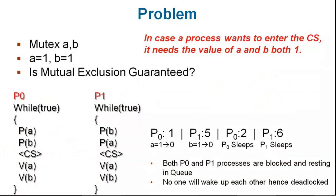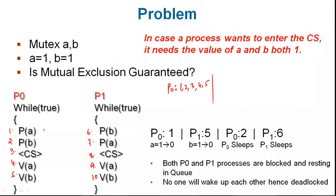This next question is similar to the previous one. A's value is 1 and B's value is 1. Mark the statement numbers: P0 has statements 1, 2, 3, 4, 5 and P1 has statements 6, 7, 8, 9, 10. In sequential execution, P0 runs 1 through 5: statement 1 — P(A) makes A go 1 to 0; statement 2 — P(B) makes B go 1 to 0. Both A and B had positive values, so critical section entry occurs.